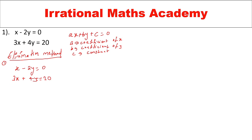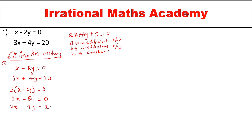The coefficient of x in the first equation is 1, and in the second equation it is 3. So I will multiply the first equation by 3: x minus 2y equal to 0 becomes 3x minus 6y equal to 0. The second equation is 3x plus 4y equal to 20.